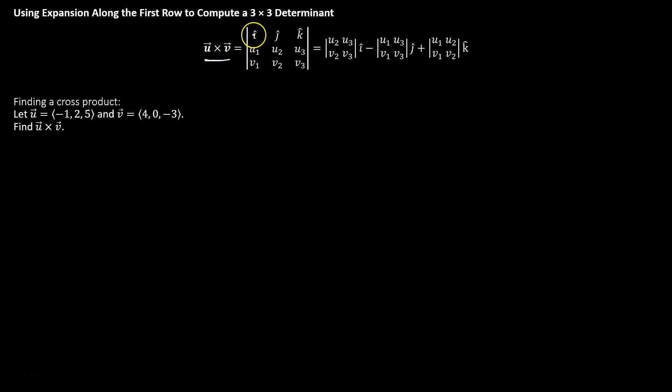So we're taking the determinant of a 3x3 matrix. The first row will be the standard unit vectors i, j, k. The second row will be every component from the u vector: u1, u2, u3.